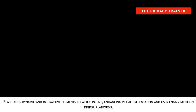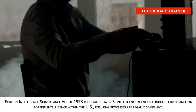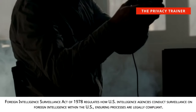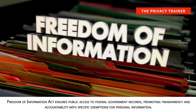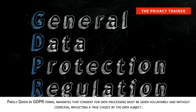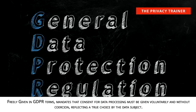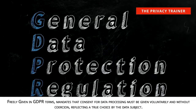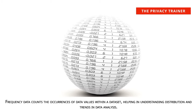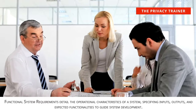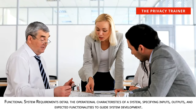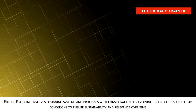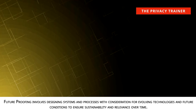Flash. Adds dynamic and interactive elements to web content, enhancing visual presentation and user engagement on digital platforms. Foreign Intelligence Surveillance Act of 1978. Regulates how U.S. intelligence agencies conduct surveillance on foreign intelligence within the U.S., ensuring processes are legally compliant. Freedom of Information Act. Ensures public access to federal government records, promoting transparency and accountability with specific exemptions for personal information. Freely given in GDPR terms. Mandates that consent for data processing must be given voluntarily and without coercion, reflecting a true choice by the data subject. Future-proofing. Involves designing systems and processes with consideration for evolving technologies and future conditions to ensure sustainability and relevance over time.